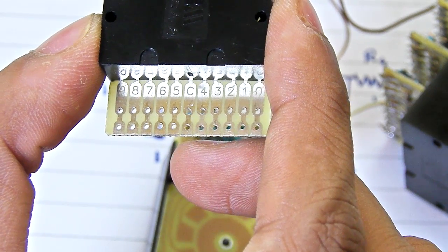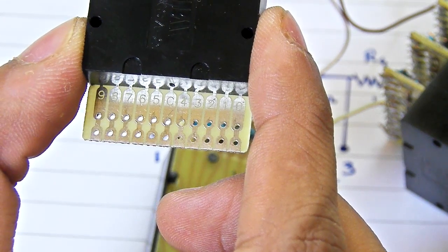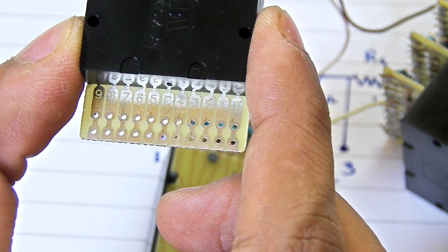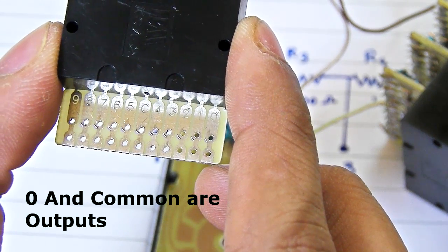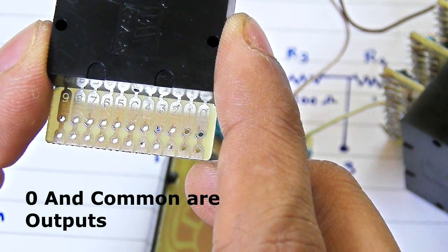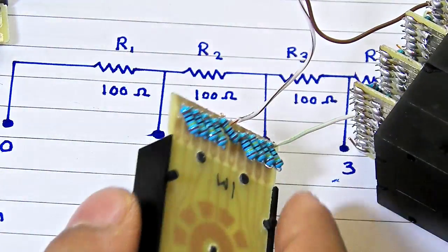Make sure that you connect resistance between four and five, not between four and C, the common terminal. You will leave the common terminal empty because you are going to connect this terminal to your external circuit. This is your output terminal. The zero terminal of your thumb wheel switch is also the second terminal of your resistance.